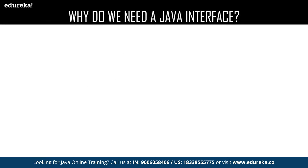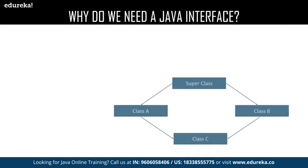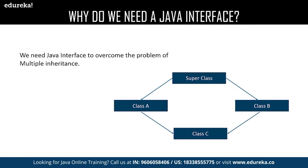We all know that Java supports inheritance, but when it comes to multiple inheritance, Java cannot support it. It ends up facing ambiguity between two pairing classes and fails to provide the required result. This particular problem is called the diamond problem. There is a super class which is inherited by two classes, class A and class B. Now we are trying to inherit the properties of class A and class B into class C, which is practically impossible in Java. That's when the interface comes into the picture — using interface, we can achieve multiple inheritance.